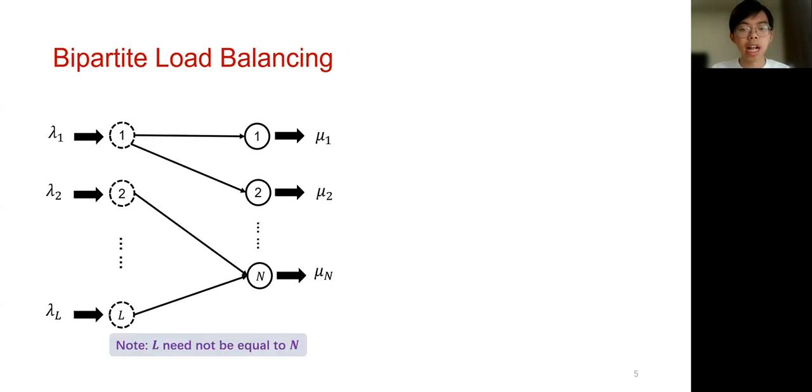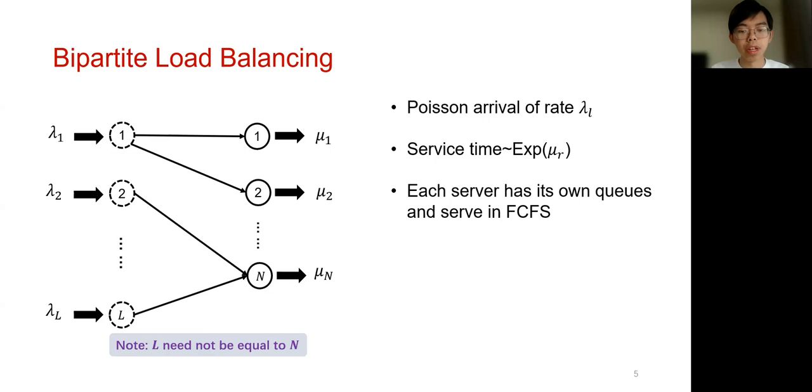To model the locality constraints, in this paper we specifically consider a refined load balancing model called the bipartite load balancing. In this model, there is a bipartite graph with L left nodes and N right nodes. Left nodes in this graph represent different types of jobs, which will need different types of data, and right nodes in this graph represent different servers in the data centers. Jobs of different types will arrive into the system in independent Poisson processes with possibly different arrival rates. For the servers, service time of jobs will follow exponential distributions but may have different service rates decided by the server itself. Each server will have its own queues and they will serve jobs in a first-come first-serve manner.